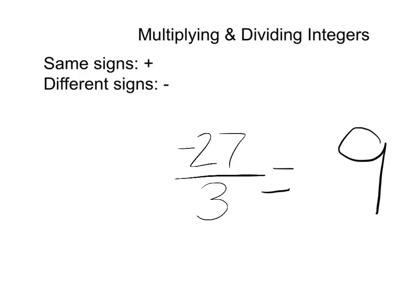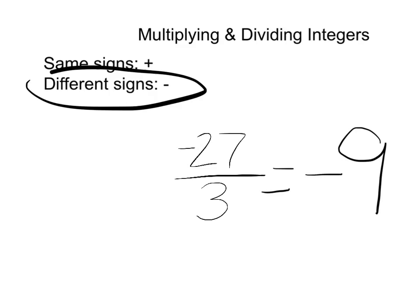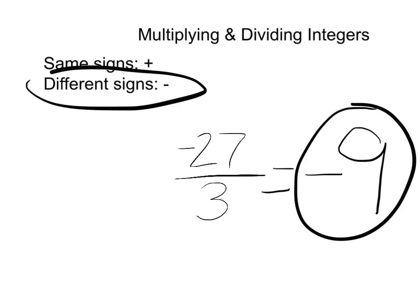Now we need to look at the signs. We've got a negative 27 and a positive 3. Since there are different signs, the answer is going to be negative. And so negative 27 divided by 3 is negative 9.